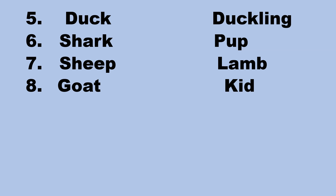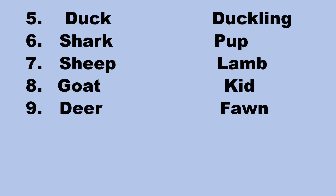Number eight, goat — the young one of a goat is called a kid. Number nine, deer — the young one of a deer is called a fawn.